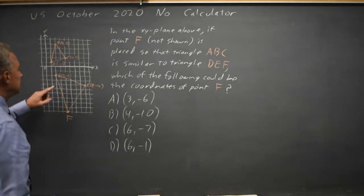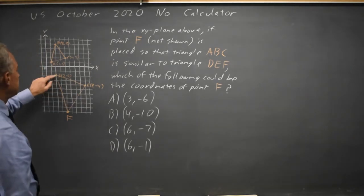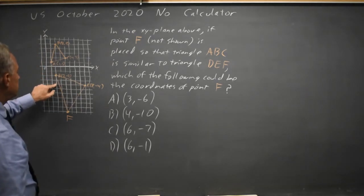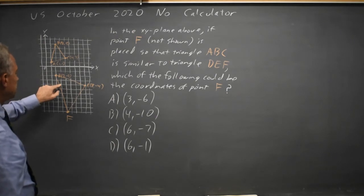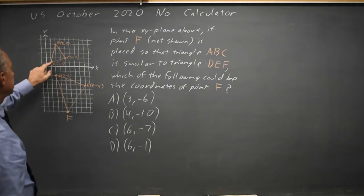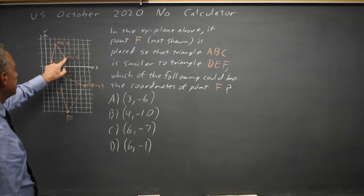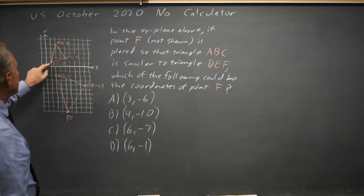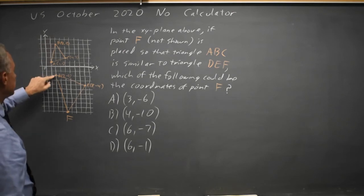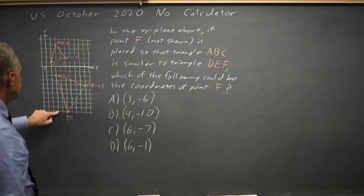And if I look from B to D I go 2 down and right 6. A to C I go up 1 and right 3. So that's a 2 to 1 ratio. From A to B I go up 4 and right 1. From D to F I go down 2, 4, 6, 8 and right 2.